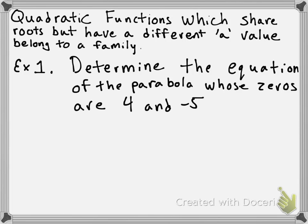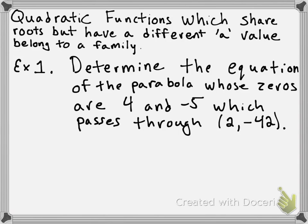It will be enough to determine the family that it belongs to, but it won't be enough to determine the a value. It will not be enough to determine the leading coefficient. So we're going to need one more bit of information, and that bit of information is going to be which point it passes through. Specifically, this is going to be the quadratic equation that belongs to the family of parabolas whose zeros are 4 and negative 5, which passes through the point (2, -42).